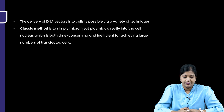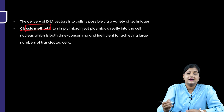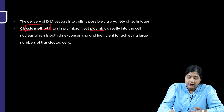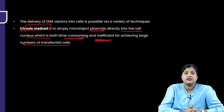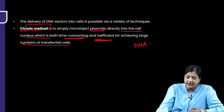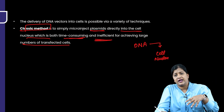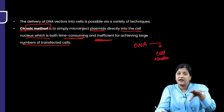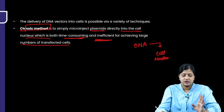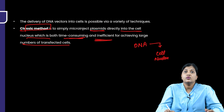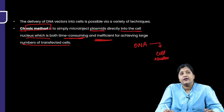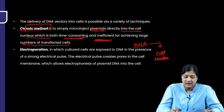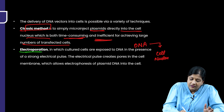The classic method of delivering DNA vectors is to simply inject plasmids directly into the cell nucleus, bypassing steps like internalization and cellular trafficking. However, this is time-consuming, inefficient, and results in a large number of transfected cells, making it difficult to ensure specificity and efficiency.